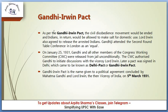The third topic is the Gandhi-Irwin Pact. As per the pact, the civil disobedience movement would be ended, and Indians in return would be allowed to make salt for domestic use. Lord Irwin also agreed to release the arrested Indians, and Gandhiji attended the second Round Table Conference in London as an equal. The Gandhi-Irwin Pact is the name given to the political agreement concluded by Mahatma Gandhi and Lord Irwin, the then Viceroy of India, on 5th March 1931. It is also known as the Delhi Pact.